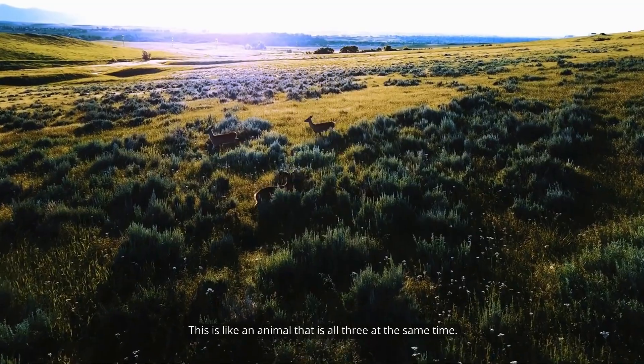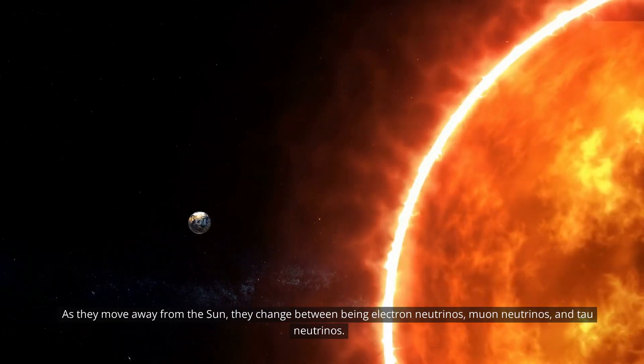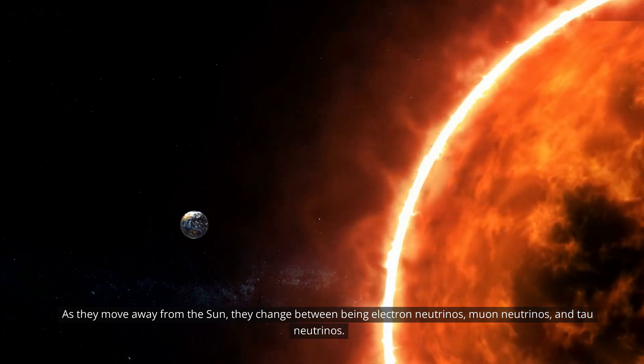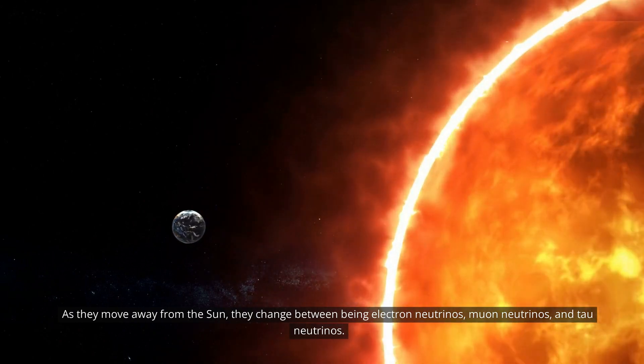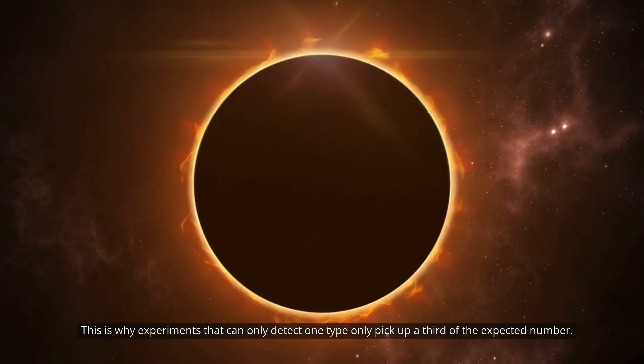Neutrinos are ghostly subatomic particles that live in a weird state called quantum superposition. This is like an animal that is all three at the same time. As they move away from the Sun, they change between being electron neutrinos, muon neutrinos, and tau neutrinos. This is why experiments that can only detect one type only pick up a third of the expected number.